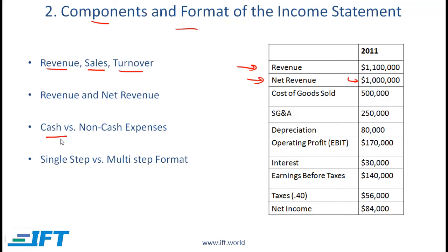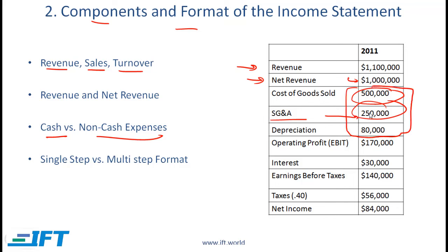The income statement will show both cash expenses and non-cash expenses. Cost of goods sold and selling, general, and administrative expenses are mostly cash expenses. Depreciation, on the other hand, is a non-cash charge. We subtract these operating expenses and are left with operating profit, also referred to as EBIT — earnings before interest and taxes. Then we subtract interest to get earnings before taxes, and subtract taxes to end up with net income.